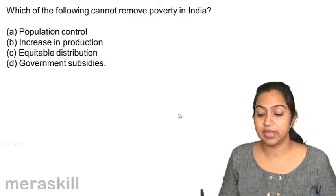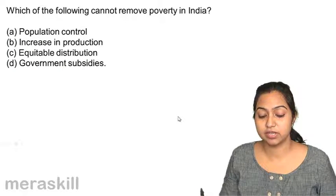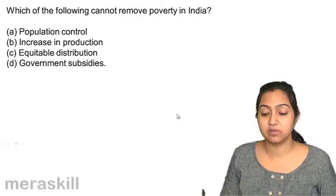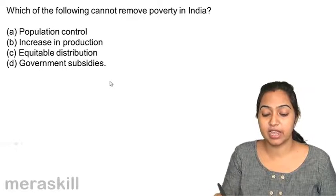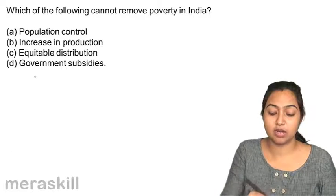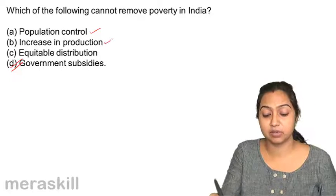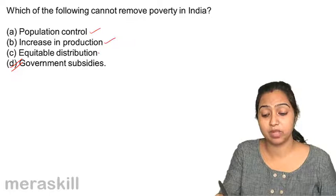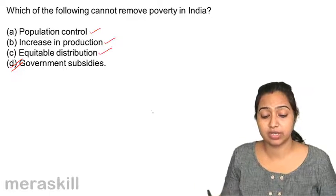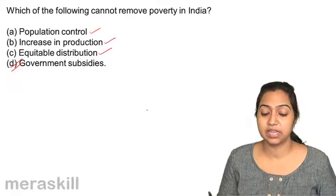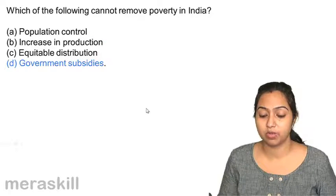Which of the following cannot remove poverty in India? Population control, increase in production, equitable distribution, or government subsidies — which of these cannot help? Government subsidies cannot help in removing poverty.